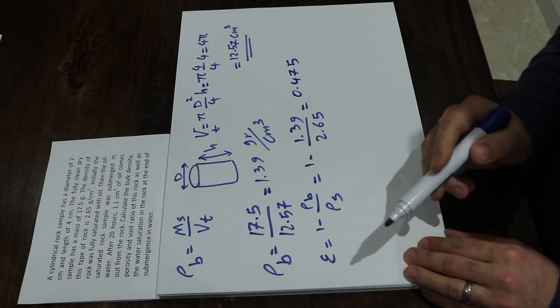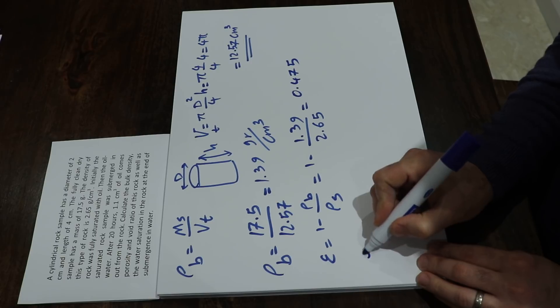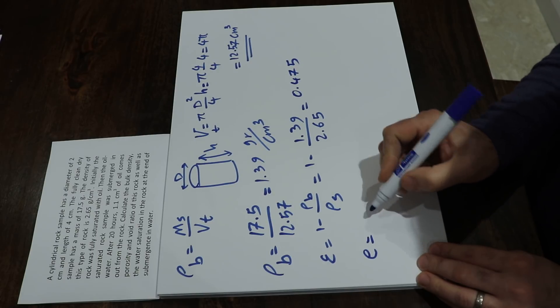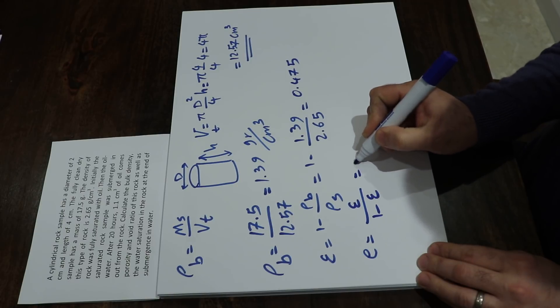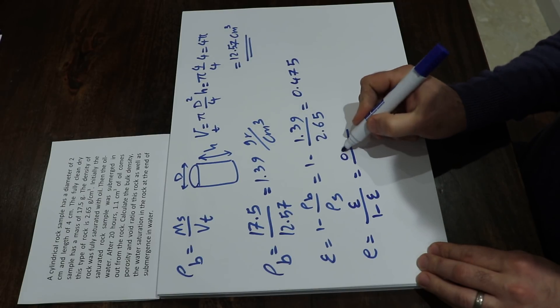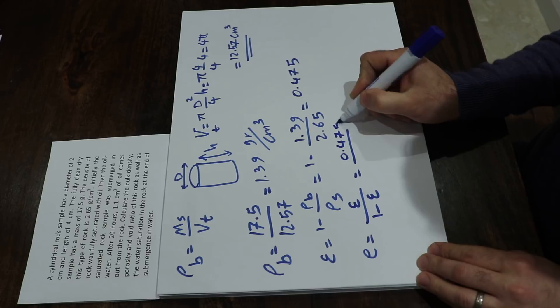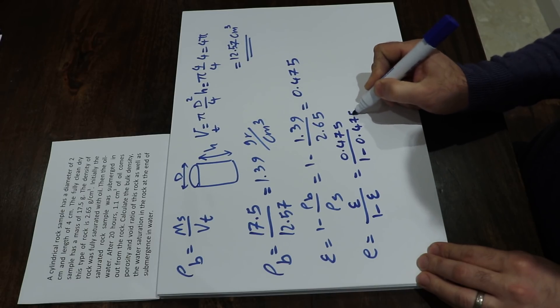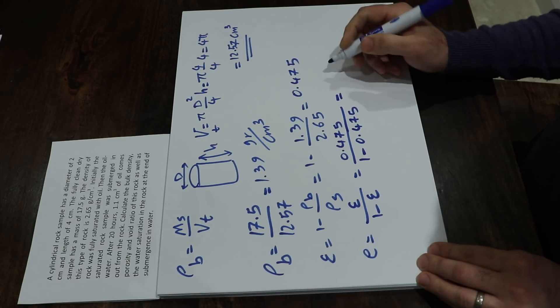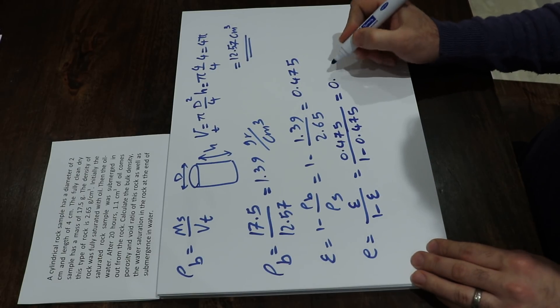The third part of the question is about void ratio. You have an equation for void ratio. Void ratio is equal to porosity divided by 1 minus porosity, which is equal to 0.475 divided by 1 minus 0.475, which will be equal to 0.905.